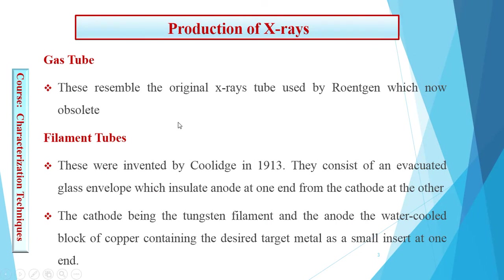There are two types of tubes used for the production of X-rays. One is the gas tube and the other is the filament tube. The gas tube resembles the original X-ray tube used by Röntgen, which is now obsolete — in this tube, gas is used as the source of electrons. Nowadays we use the filament tube, invented in 1930, which consists of an evacuated glass tube with an insulated anode at one end and a cathode at the other.